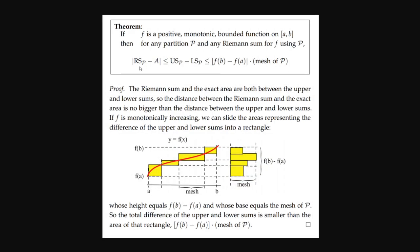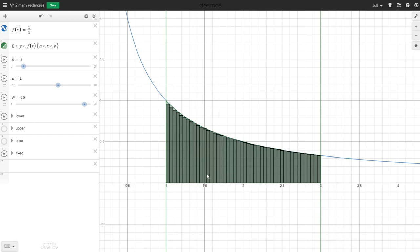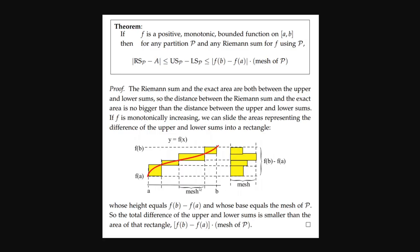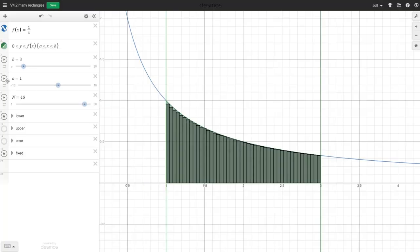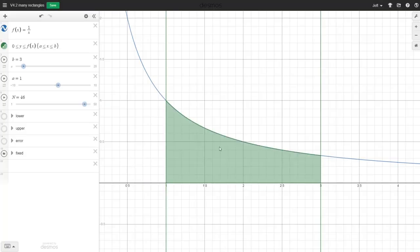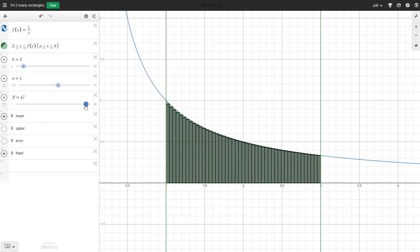There's a theorem that says for any Riemann sum for a given partition of an interval, the absolute difference between that Riemann sum and the actual area is no bigger than the distance between the upper and lower values of a monotonic function times the mesh of the partition — the largest width of any interval. As we let that mesh, or delta x, get smaller and smaller, this goes to 0, meaning any Riemann sum — midpoint, left endpoint, right endpoint, upper, lower — gets closer and closer to the actual area.